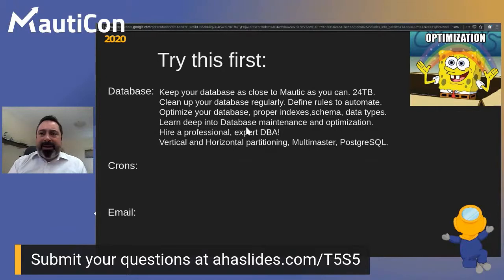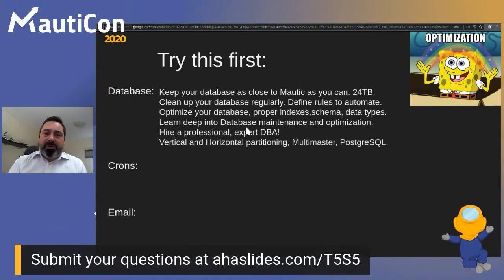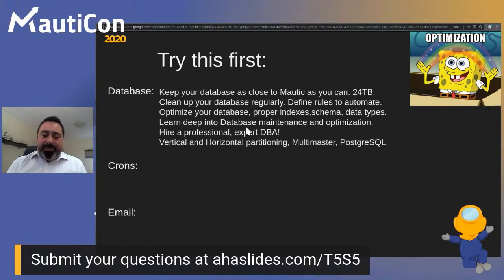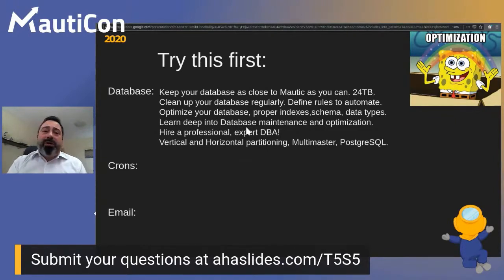You can define rules to automate the database cleanup process and even move data overnight to another database so you keep it but don't have it burdening MAUTIC — you can then read it with analytic tools. Optimizing the database is also very important: proper indices, schema, and data types. The data types in MAUTIC are okay but are not designed for high performance or high loads, so fine-tuning them will help. Learn as much as you can about database maintenance and optimization, or hire someone who is a real expert.